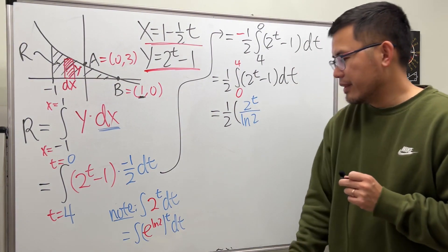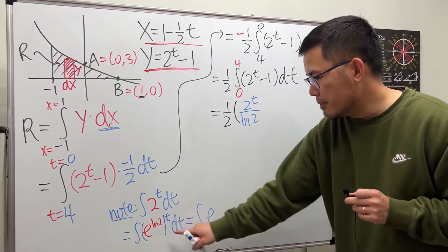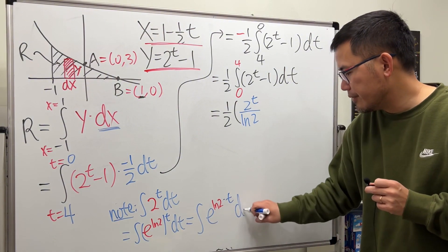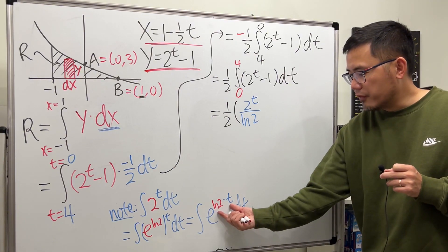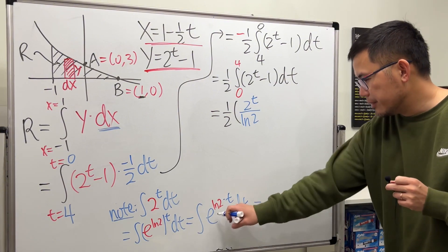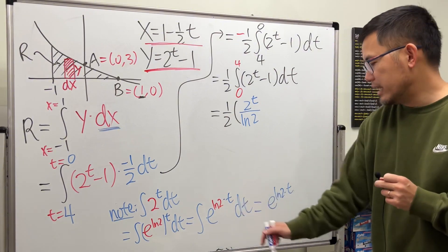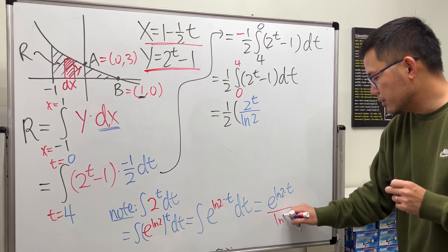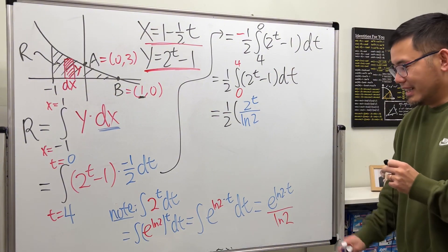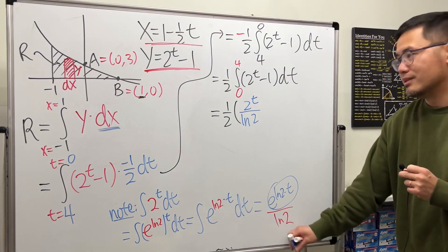And then right here, this becomes the integral of e, right? The base stays the same, but we multiply the powers, so we have ln2 times t dt. And you can see that the derivative of this right here is just a number, ln2. So when you integrate that, you get this back, e^(ln2·t), but we will have to divide it by that number, so just divide it by ln2. Plus c, but that's not the whole thing. And this guy is just 2^t, so we have 2^t over ln2. Just like that.